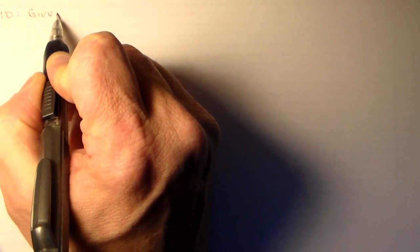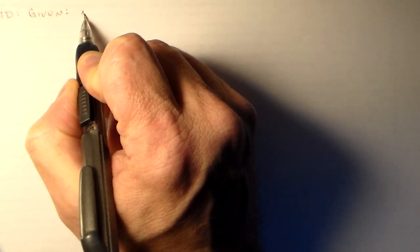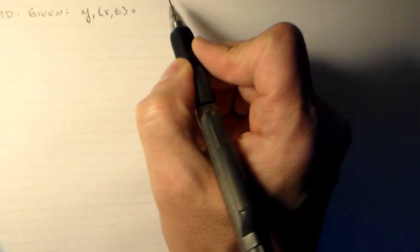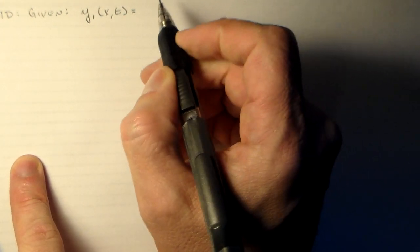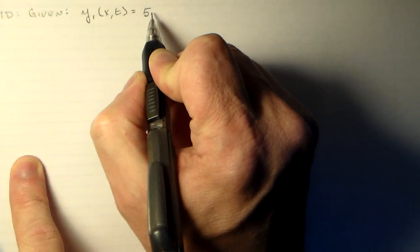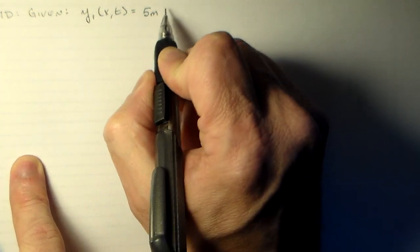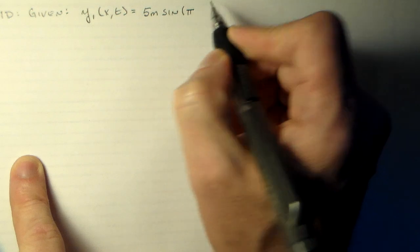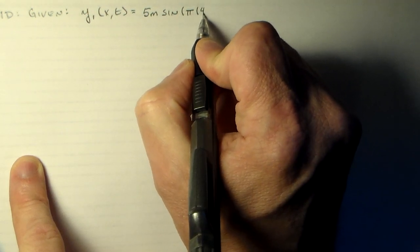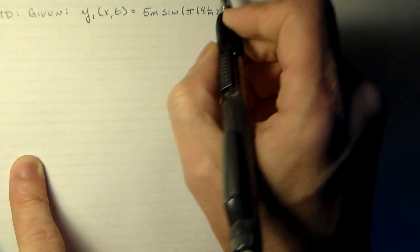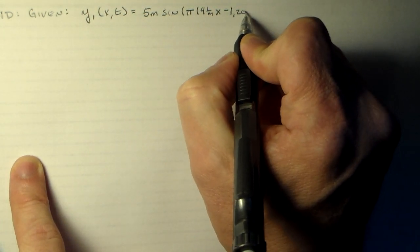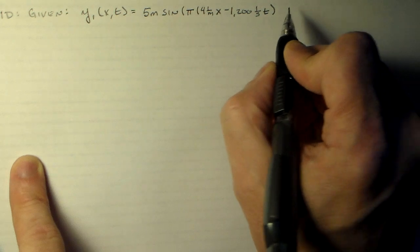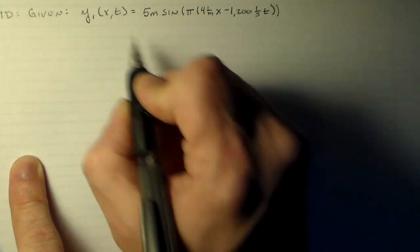So in this case, we're going to be given two sine waves, one y1. And y1 is 5 meters times the sine of pi times 4 inverse meters times x minus 1200 hertz times time. Okay, and that's it.